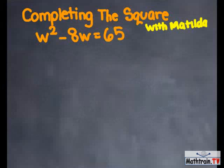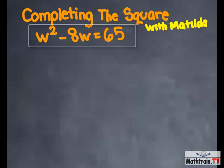Hi, I'm Matilda and today we're going to complete the square. Our equation is w squared minus 8w equals 65.